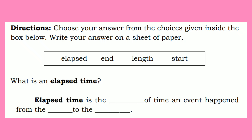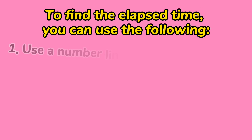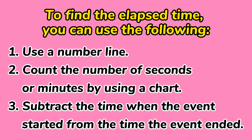Let's check what you have learned. Choose your answer from the choices given inside the box below. Elapsed time is the length of time an event happened from the start to the end. And to find the elapsed time, you can use the following methods.